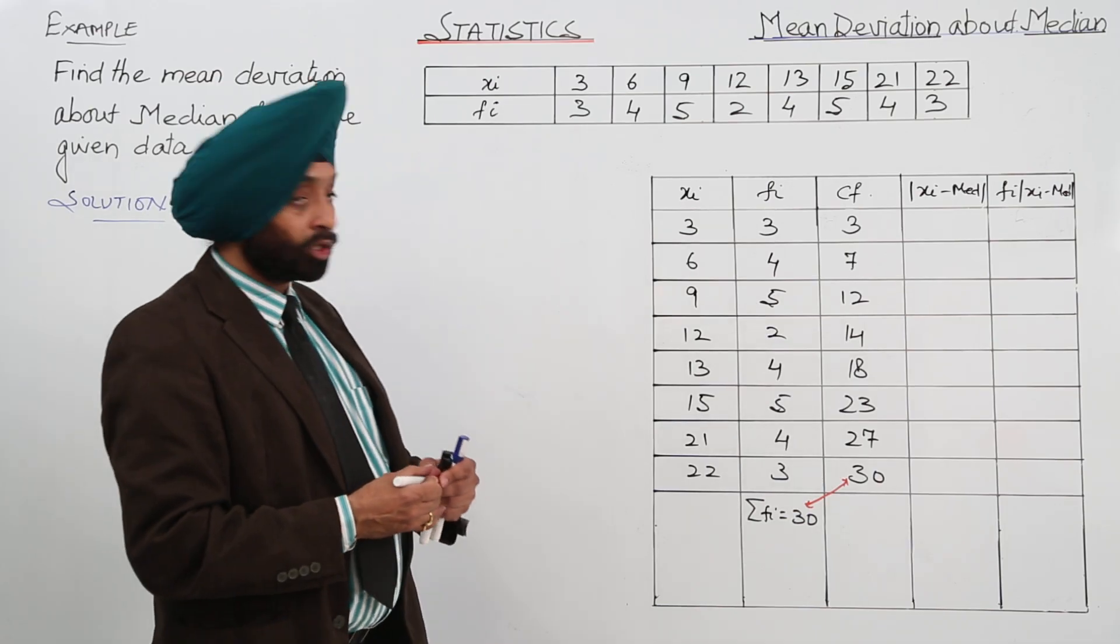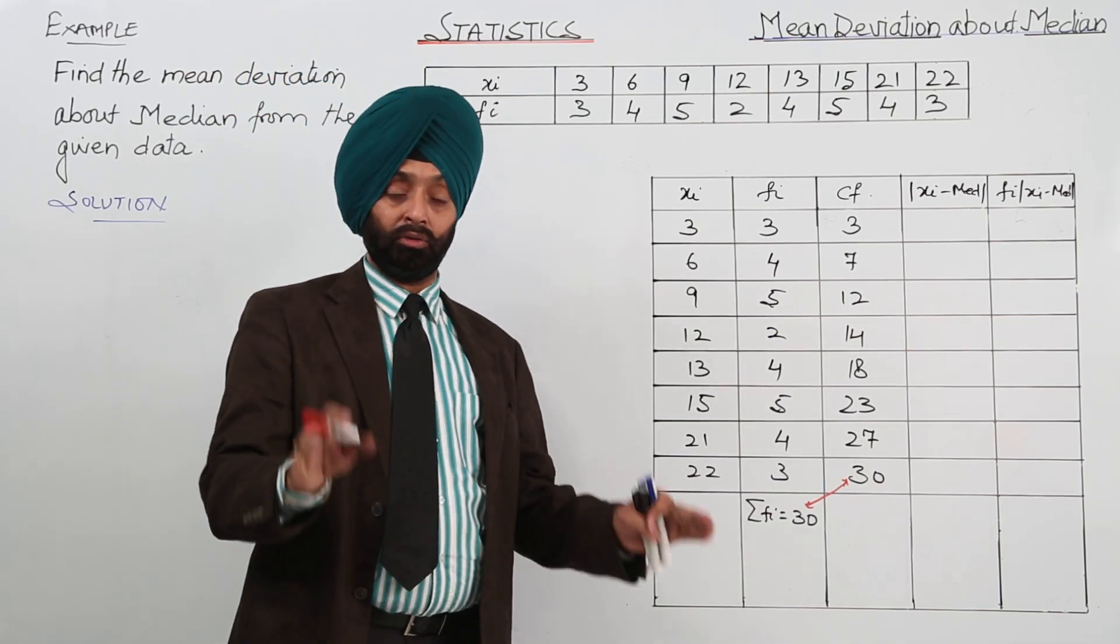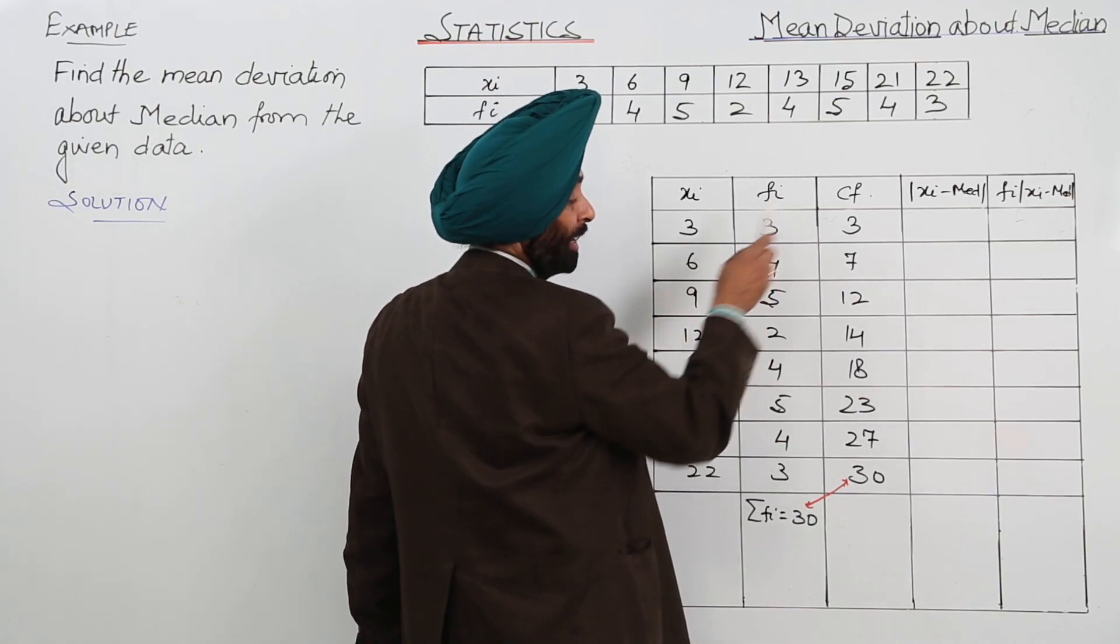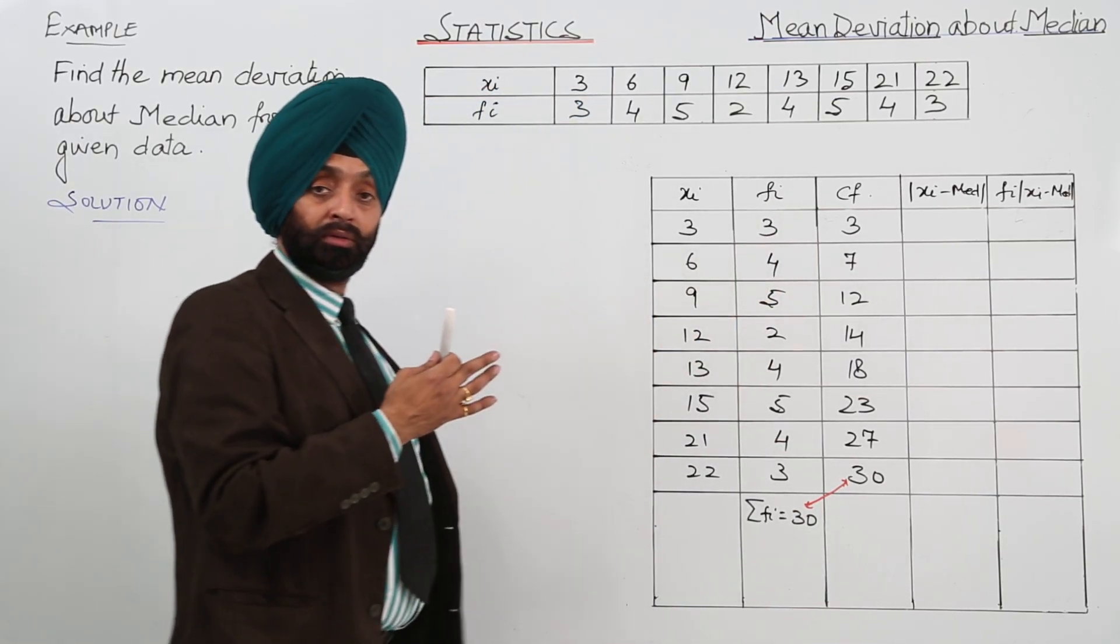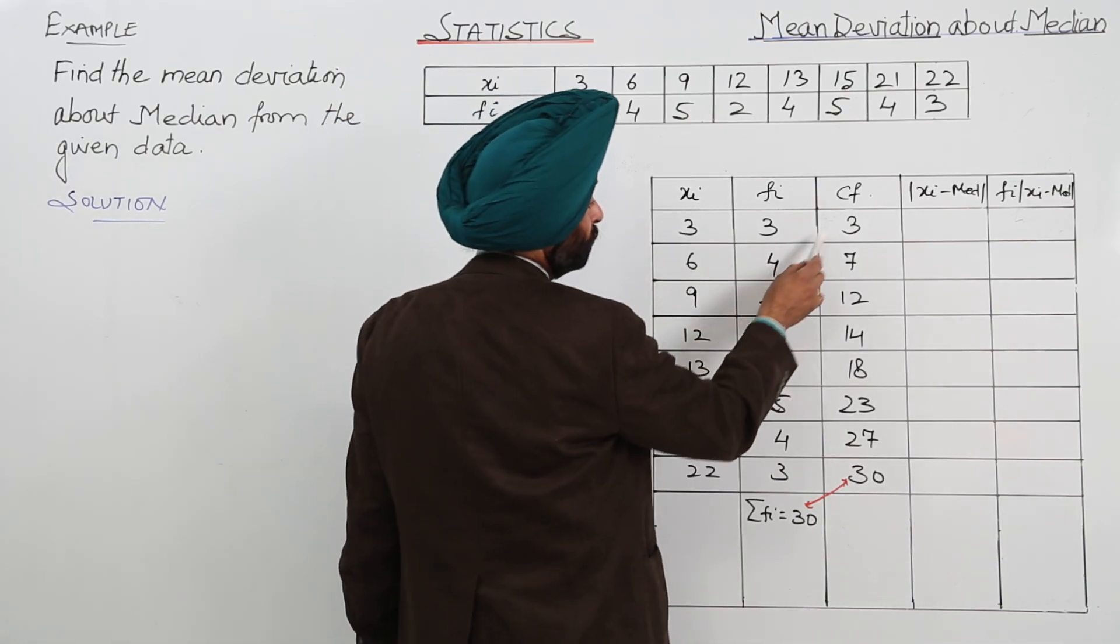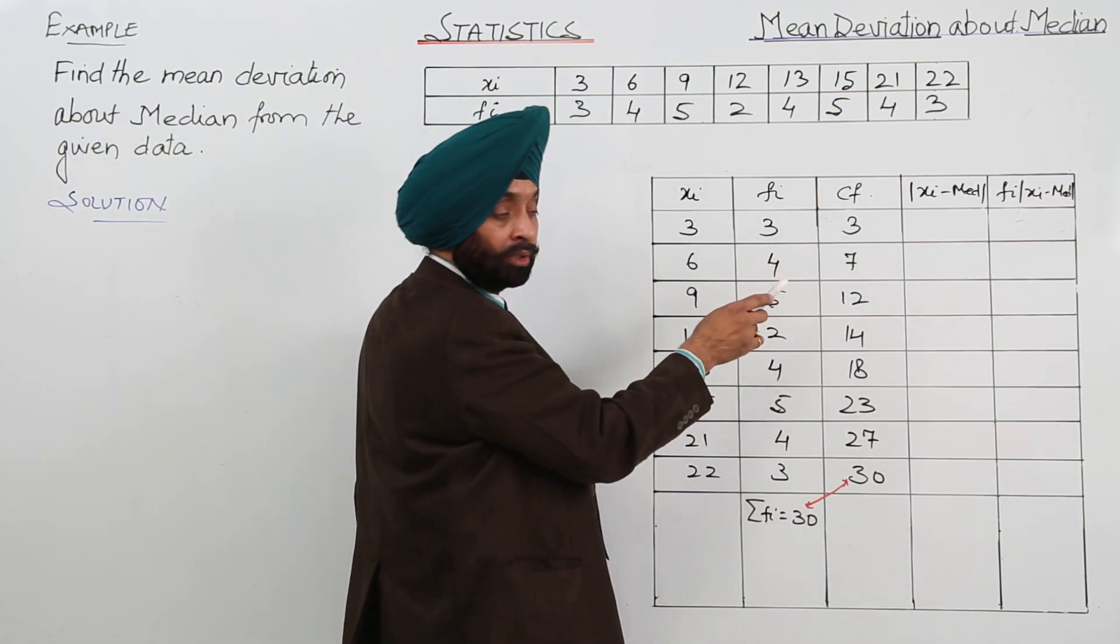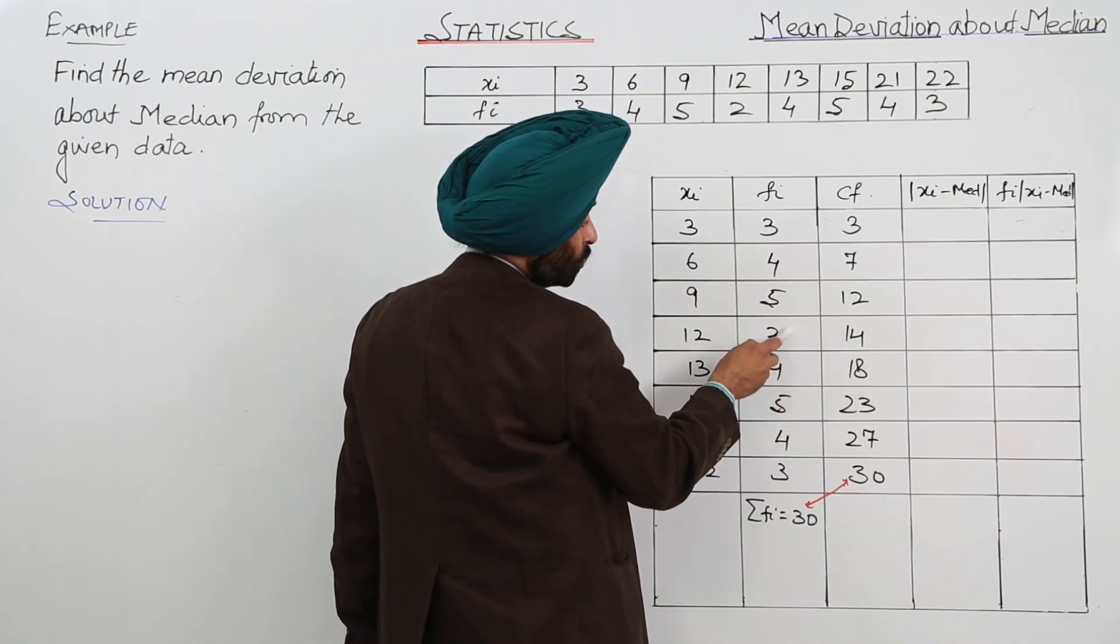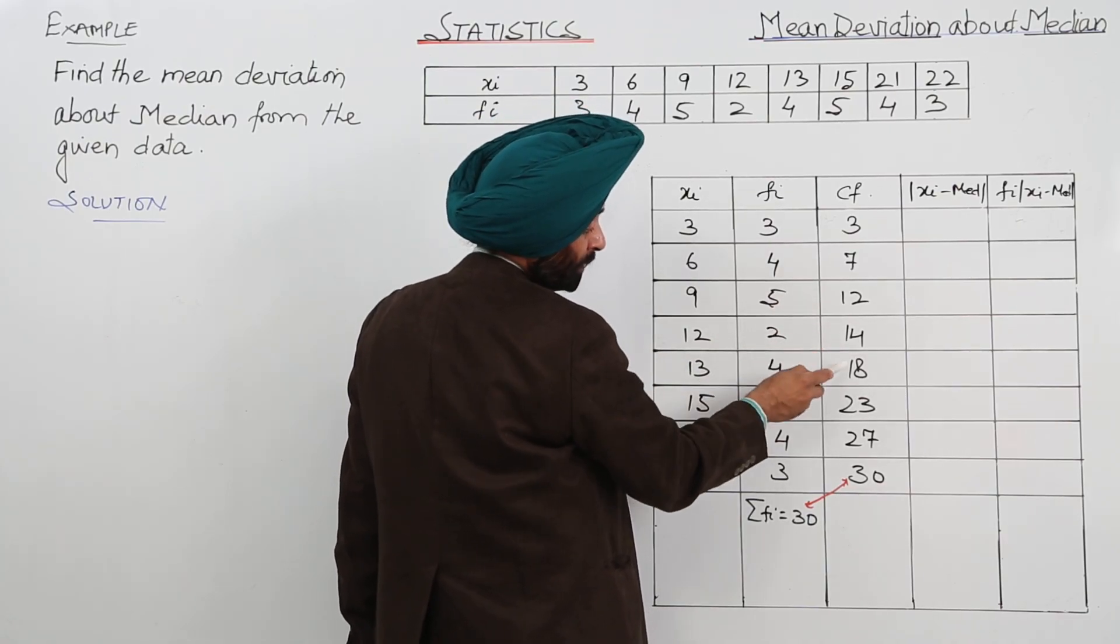Now what we have done it in the cumulative frequency? A well thing, well known to you. But let me tell you once again, let me remind you. First term will be added. Then go on adding the previous term. Now 4 plus 3, Fi will be added. 4 plus 3, 7. 5 plus 7, 12. 2 plus 12, 14. 4 plus 14, 18 like this.